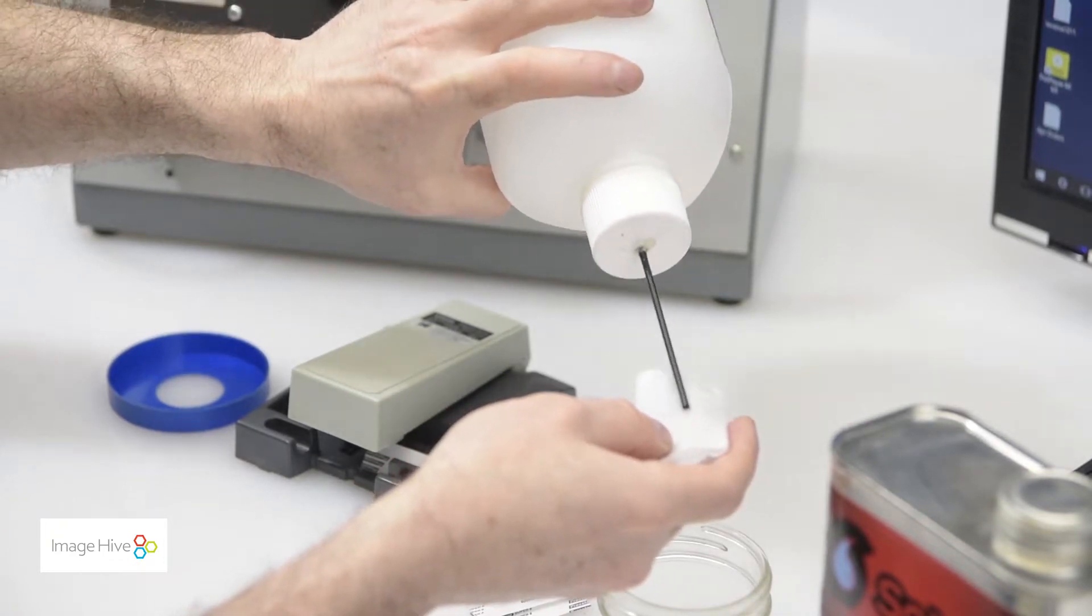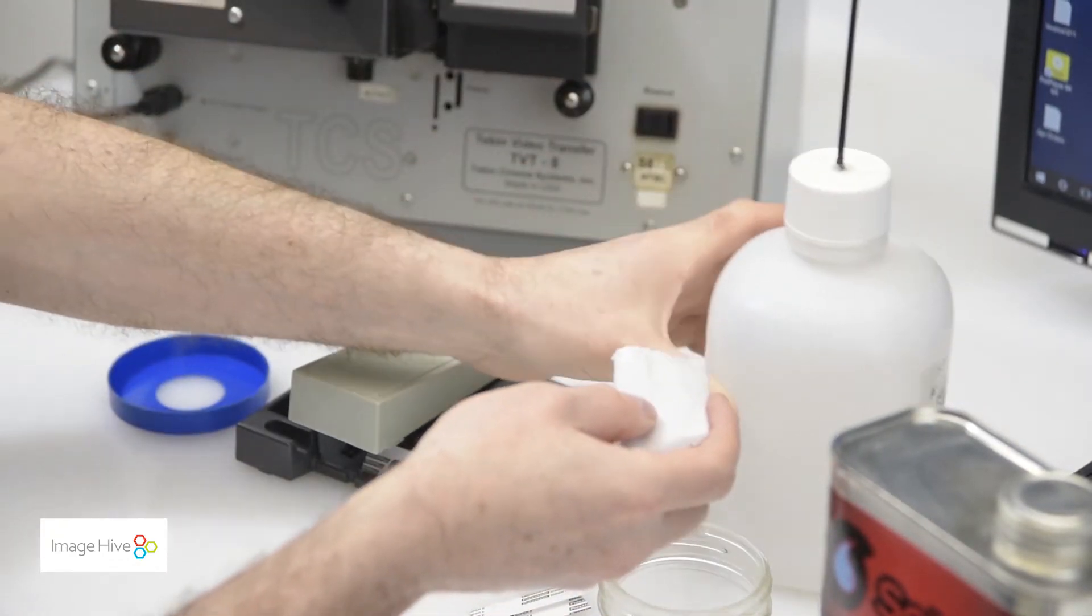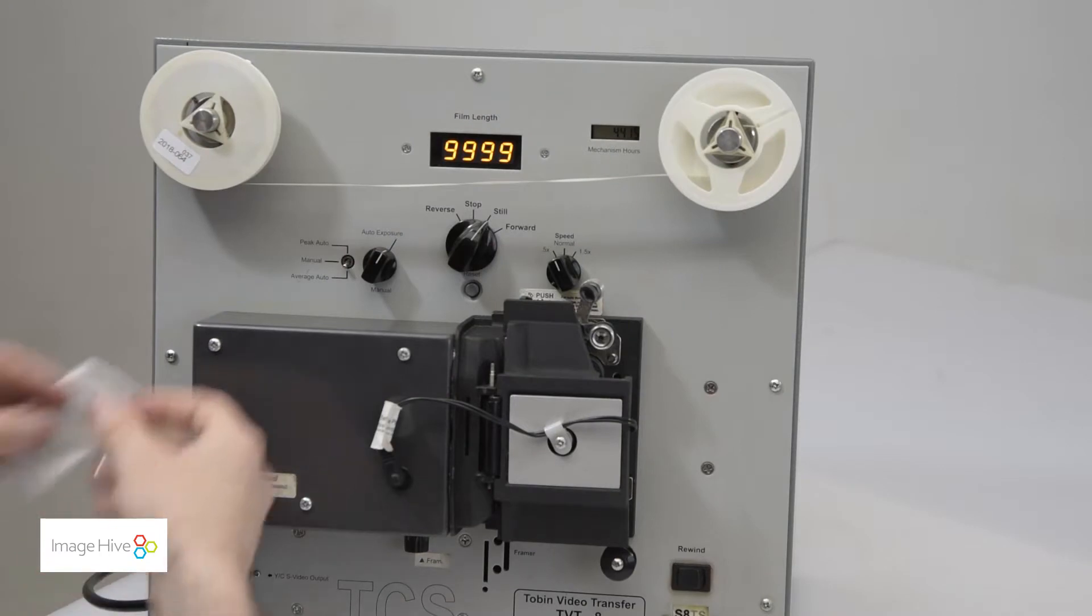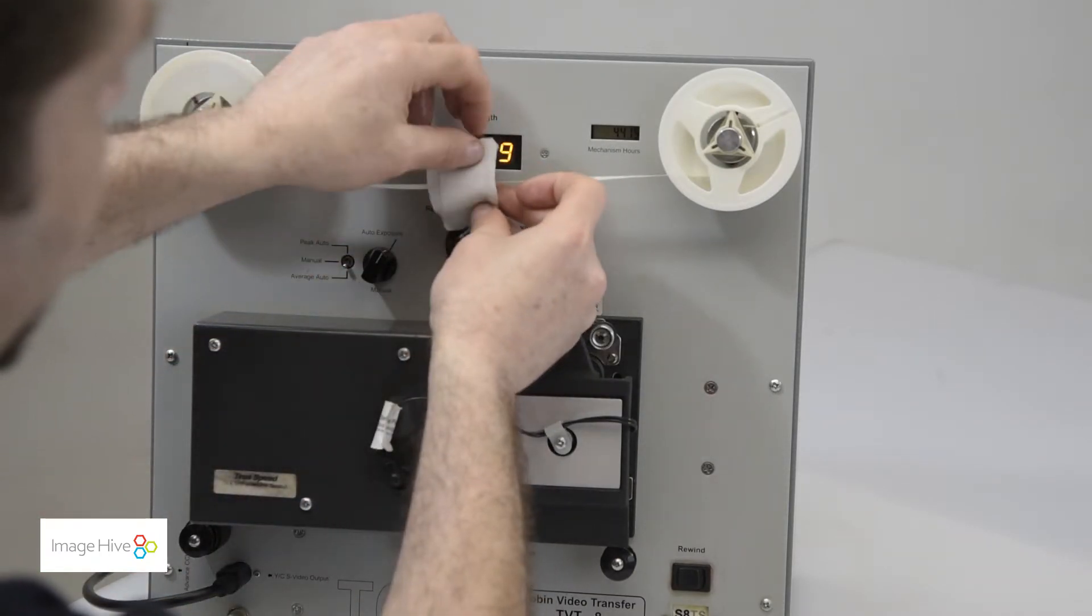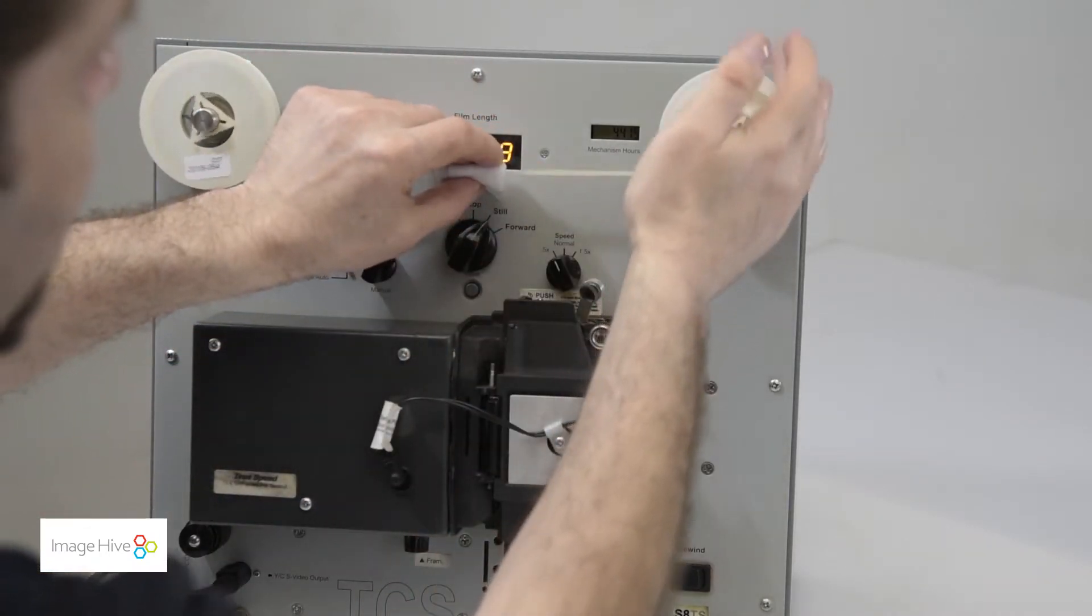Let's run the film through once while applying a rag with a film cleaning solution on it to clean the film. Cleaning is important as it gets rid of any major artifacts that could affect the final quality of the film.